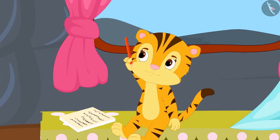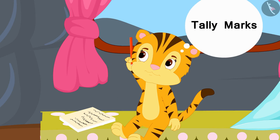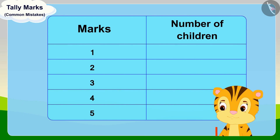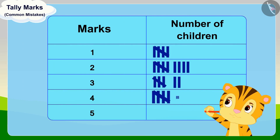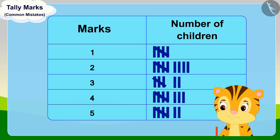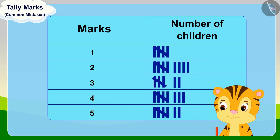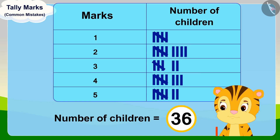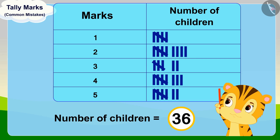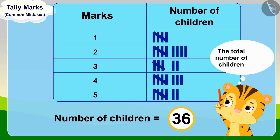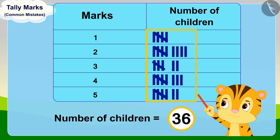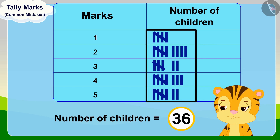She thought, why not use tally marks to find that out? She created a table using tally marks. But when she looked at the total number of children in the table, she found that the marks of 36 children are recorded. Mrs. Khan started wondering, because the total number of children is 35, but according to the tally marks, marks of 36 children are recorded.